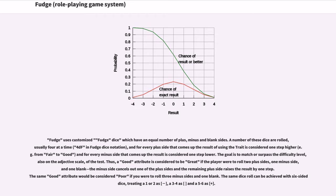Thus, a Good attribute is considered Great if the player rolls two plus sides, one minus side, and one blank. The minus side cancels out one of the plus sides, and the remaining plus side raises the result by one step. The same Good attribute would be considered Poor if you were to roll three minus sides and one blank.